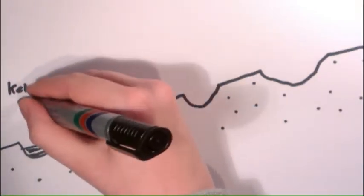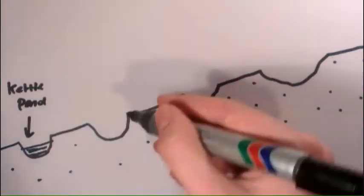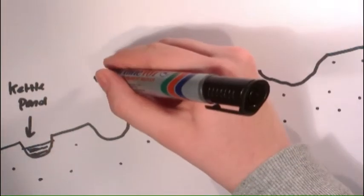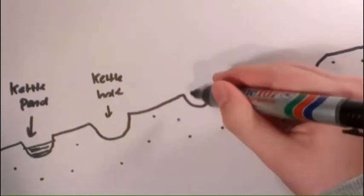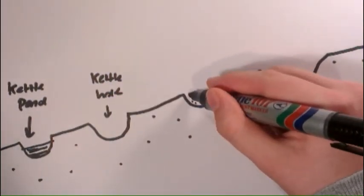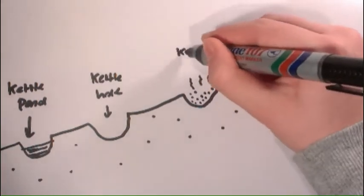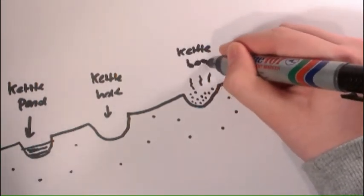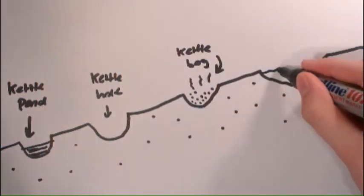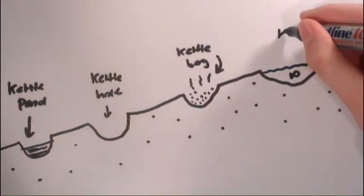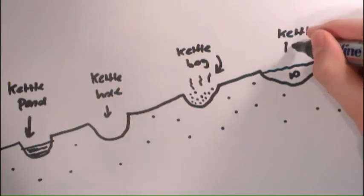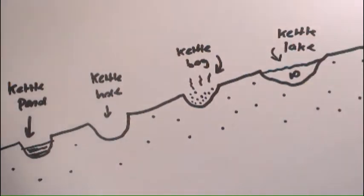There are several types of Kettle Holes: Kettle Ponds, Kettle Holes, Kettle Bogs, and Kettle Lakes. A Kettle Hole is the basic ice melt kettle hole that is usually filled with just sediment.